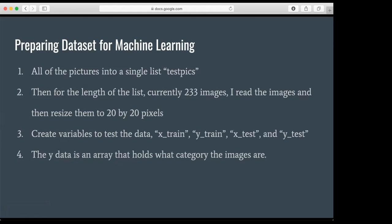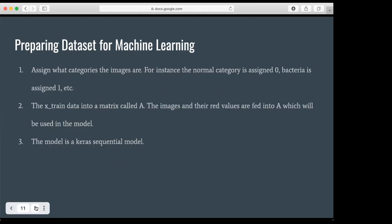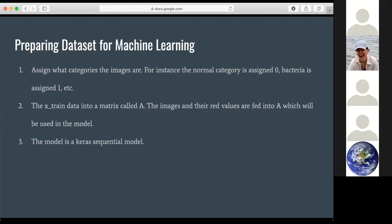The Y-data is an array that holds what category the images are. So I assign what categories the images are. For instance, the normal category was assigned a 0, bacteria a 1, etc.